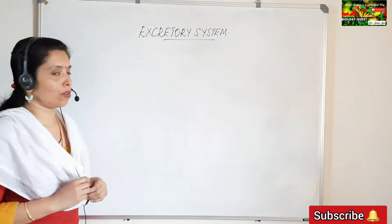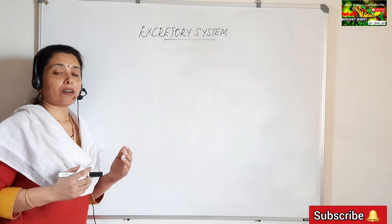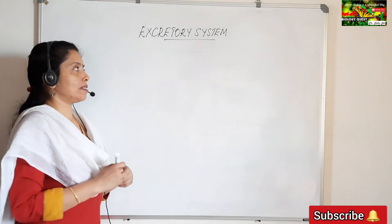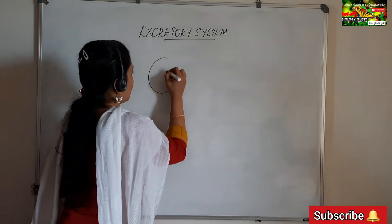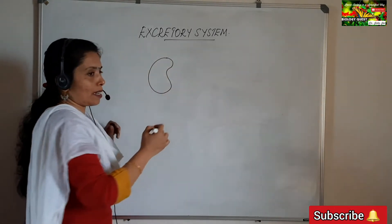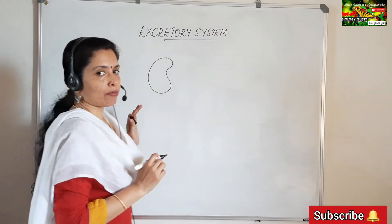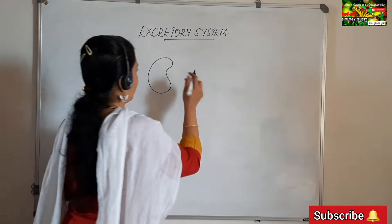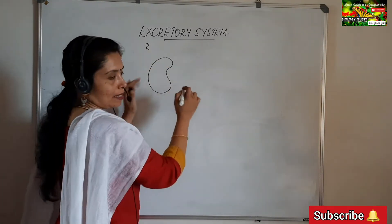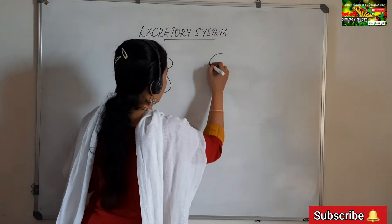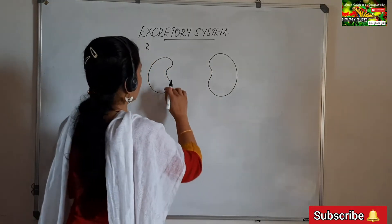I am going to draw the structure of the excretory system, also called the urinary system. Remember, whenever we study these systems, your left-hand side corresponds to the right side of the system being drawn. So here is the right kidney on my left-hand side, and that is the left kidney — two bean-shaped structures.